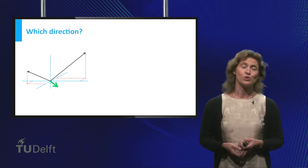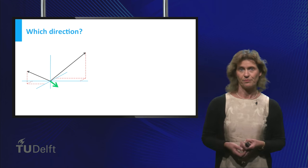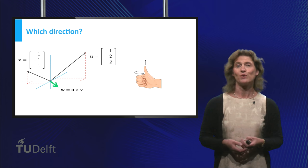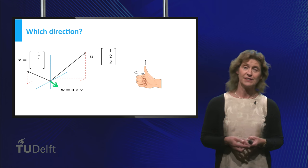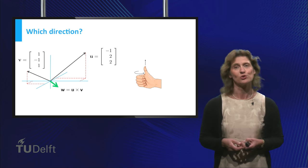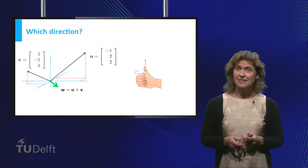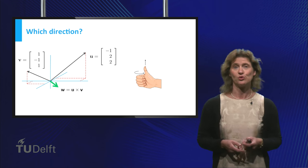To choose one of the two directions, there is a nice rule called the right hand rule. If the fingers of your right hand curl from u to v, then your thumb points in the direction of the vector perpendicular to u and v that we will choose. This vector is the cross product of u and v.